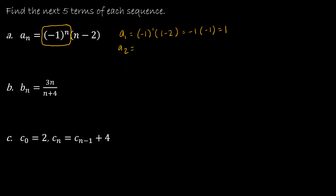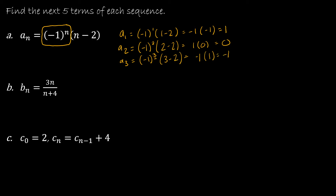A sub 2 would be negative 1 squared, and then 2 minus 2 — so this is positive 1 times 0, which is 0. And then a sub 3 is negative 1 to the 3rd, which gives me negative 1 again because it's an odd number of negatives, and then 3 minus 2 which is 1, so that's negative 1.